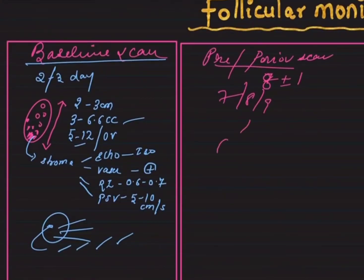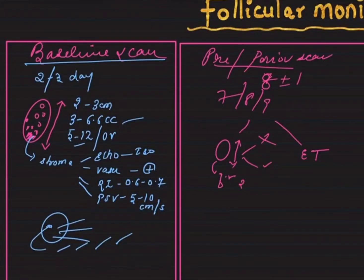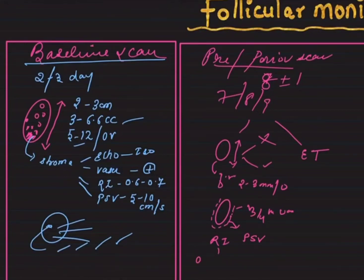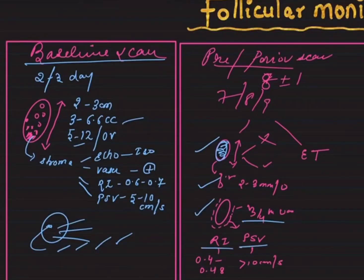In the pre-periovulatory scan done every alternate day, we look for the follicle within the ovary and the endometrium. For the follicle, we assess: the size, given either in two dimensions (length and width) or as an average; the growth rate, which should ideally be 2 to 3 mm per day; and the vascularity around the follicle, which should cover three-fourths of the growing follicle. The RI of follicular vascularity should be 0.4 to 0.48, and the PSV should be more than 10 cm/sec.